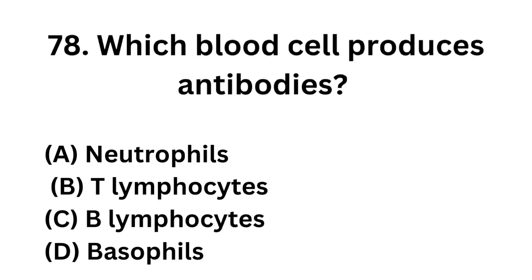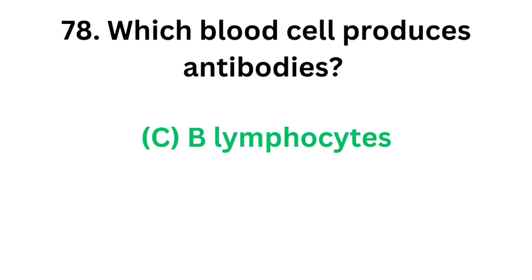Question number 78. Which blood cell produces antibodies? Option A: Neutrophils. Option B: T-lymphocytes. Option C: B-lymphocytes. Option D: Basophils. The correct answer is Option C: B-lymphocytes.